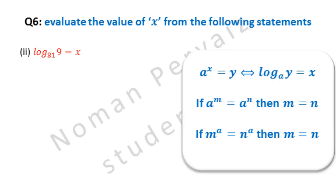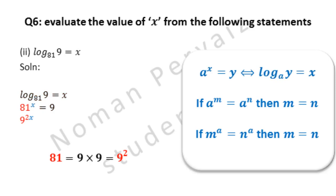We are going to solve part 2 of question number 6. Part 2 is: log base 81 of 9 is equal to x. By applying the first property, log base 81 of 9 equal to x becomes 81 raised to the power x equal to 9. Here, 81 can be written as 9 raised to the power 2, because 9 nines are 81. So x is in the power and it comes with the power, becoming 9 raised to the power 2x. Here, 9 has no power, so by default its power is 1.